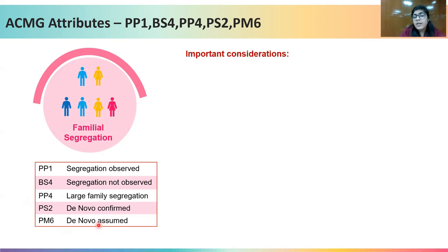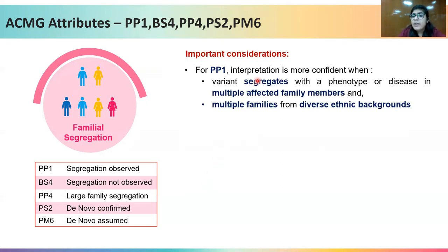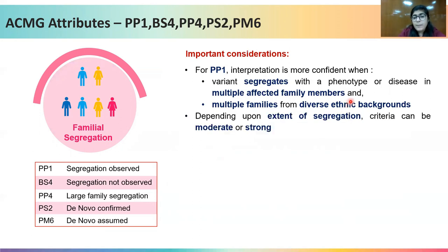For PP1, interpretation becomes more confident when the variation segregates with the phenotype or disease in multiple affected family members and also in multiple families from diverse ethnic backgrounds. Depending upon the extent of segregation, you could give the PP1 criteria as moderate or strong.